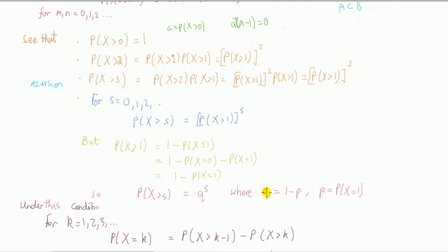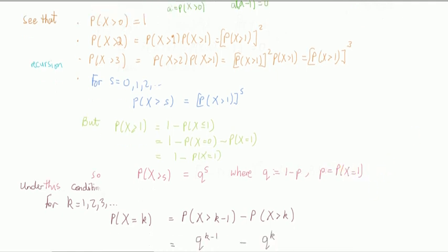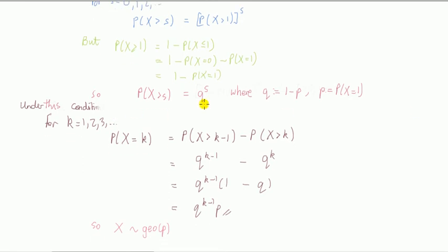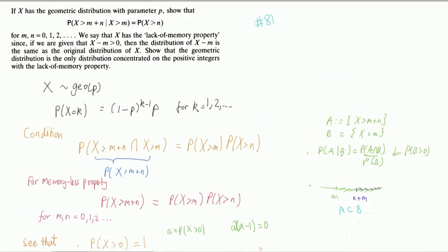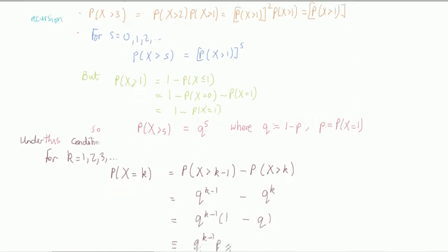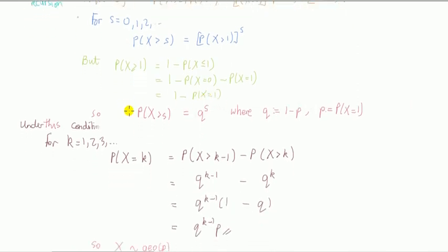You know what I'm thinking about here. q is 1 minus probability, basically, of success. And then p is probability x is equal to 1. So this is the condition then. So we have gone, let's step back a bit. We've gone from saying that this condition, memoryless property, holds, and implies this.